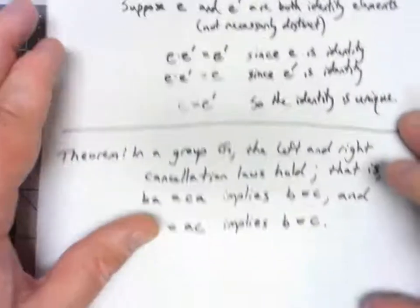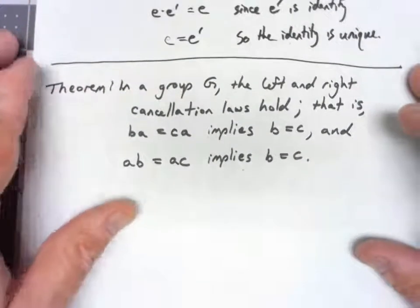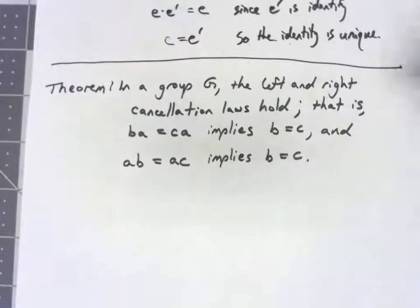Let's take a look at another important property. In a group G, we have what we call left and right cancellation. This is actually really kind of where the algebra comes into things, because this is very much like solving an algebraic equation.